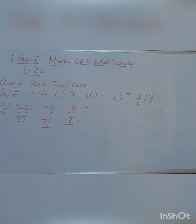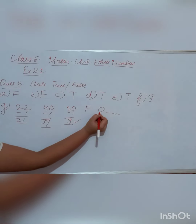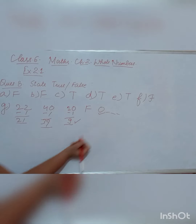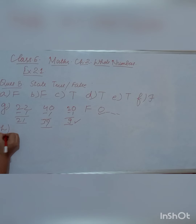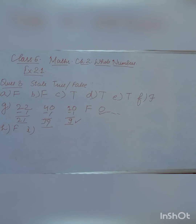The H part says: '1 is the smallest whole number.' But 1 cannot be the smallest whole number because whole numbers start from 0. So 0 is smaller than 1. Therefore our H statement is also false.